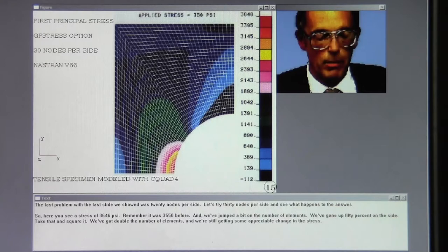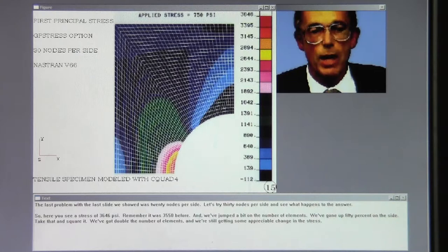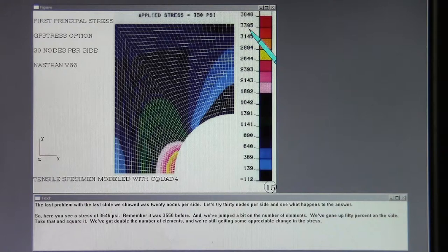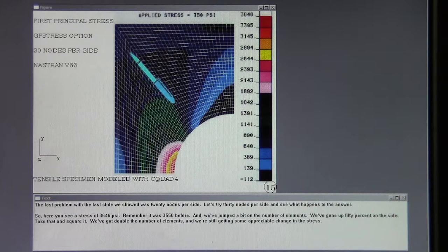The last problem with the last slide we showed was 20 nodes per side. Let's try 30 nodes per side and see what happens to the answer. So here you see a stress of 3646 psi. You remember it was 3550 before. And we've jumped a bit in the number of elements. We've gone up 50% on a side. Take that square. We've got double the number of elements and we're still getting some appreciable change in the stress.